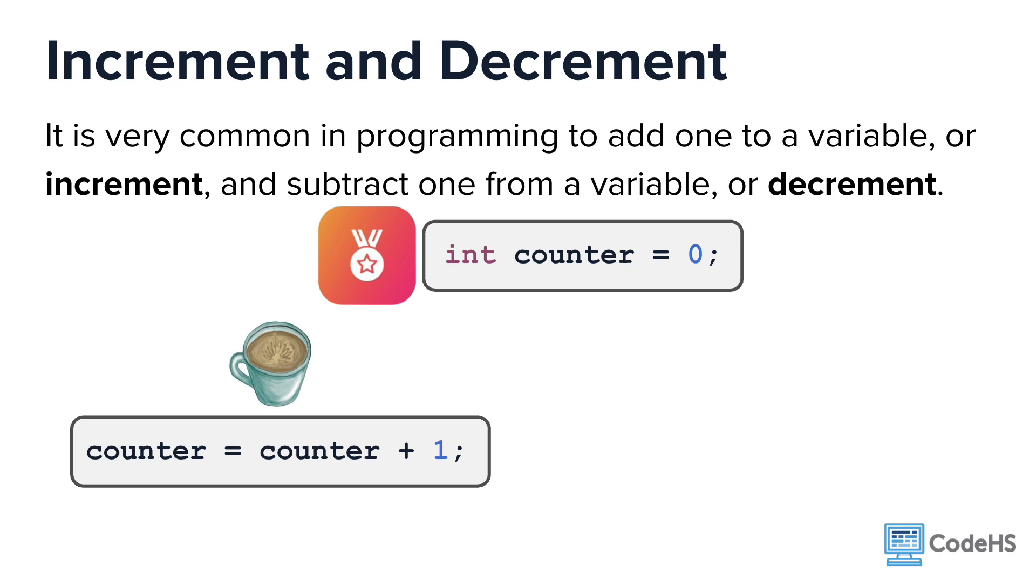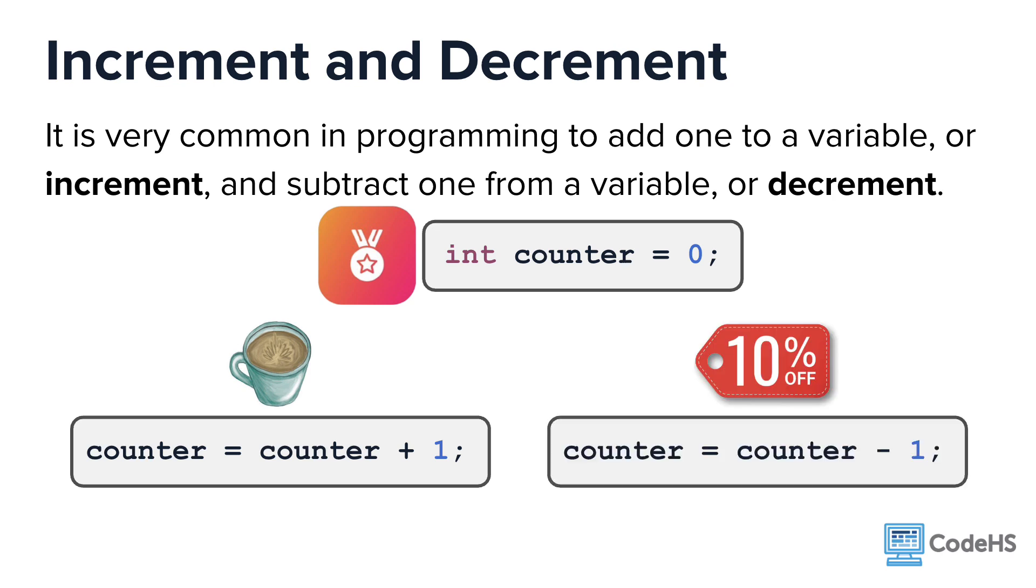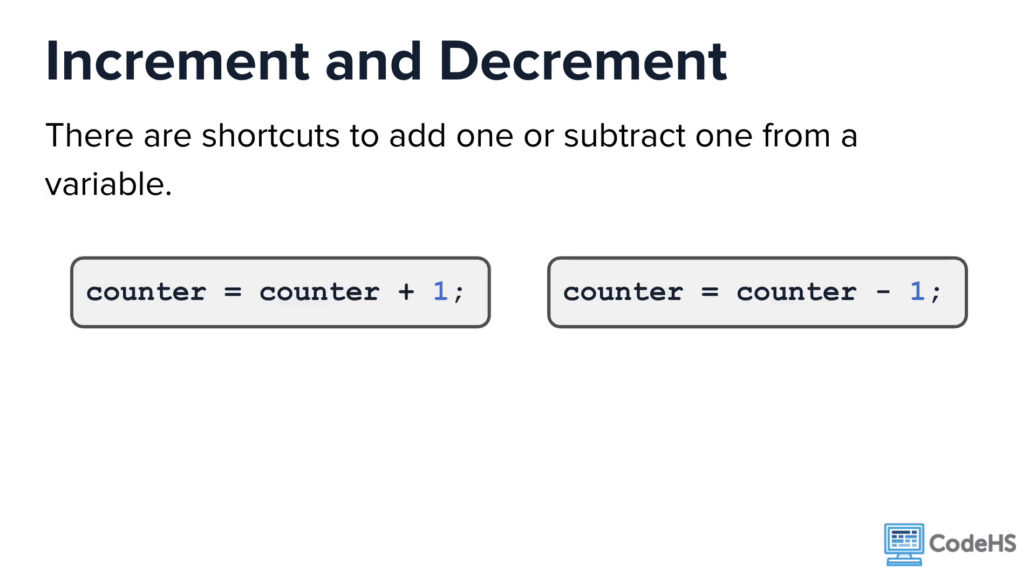You might also have functionality where the customer can spend 1 rewards counter for a discount. So then each time the customer spends a rewards counter, you decrease the customer's rewards counter by 1. Because this is such a common practice, there are shortcuts you can use to add 1 or subtract 1 from a variable.